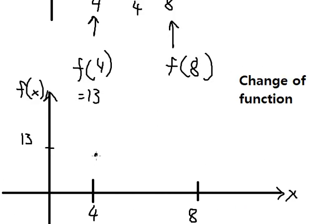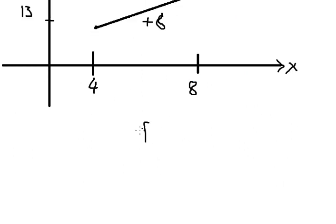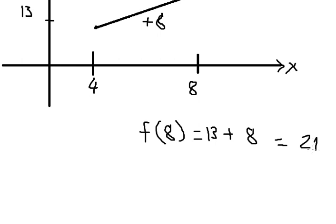So we have f of number four equals 13. Adding the minimum area of eight, we get f of number eight equals 13 plus 8, which equals 21. And that is the final answer. Thank you for watching.